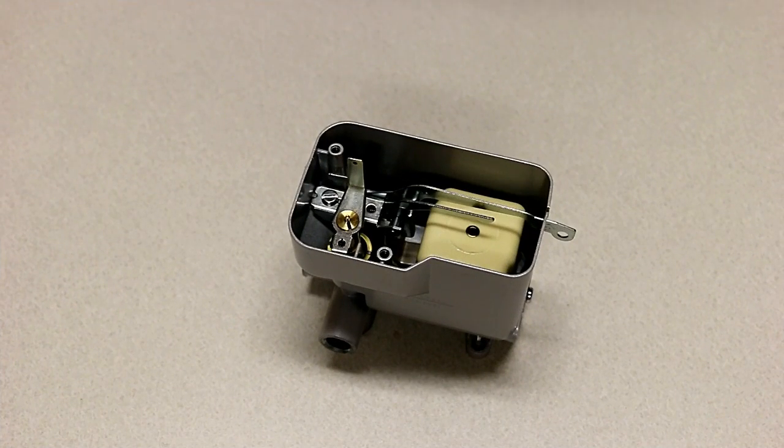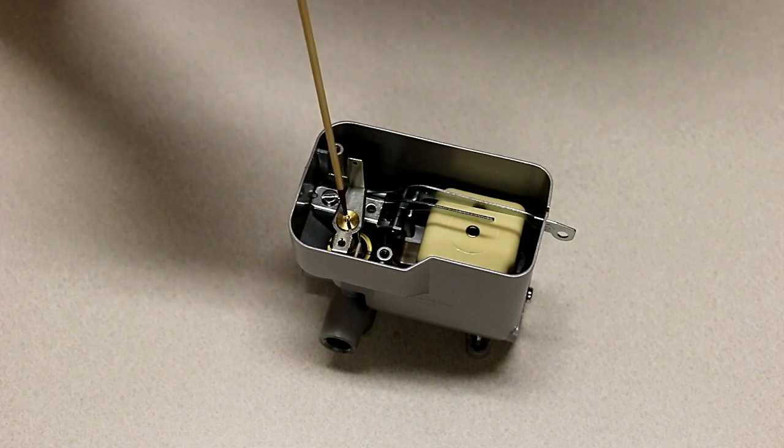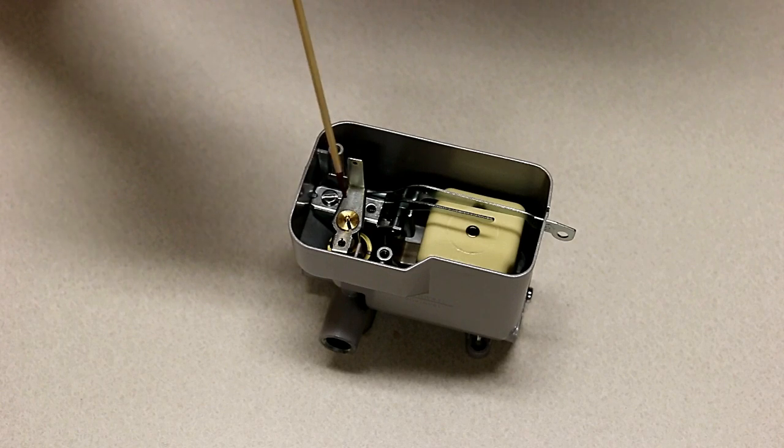The second major function of this oil control is to meter the amount of fuel that goes to the burn pot. That's handled by this device right here which we refer to as a metering stem.